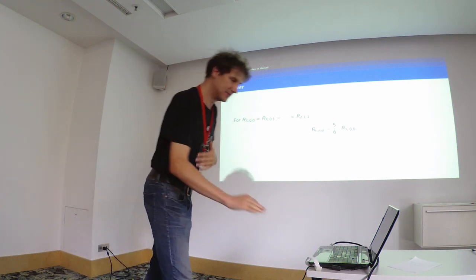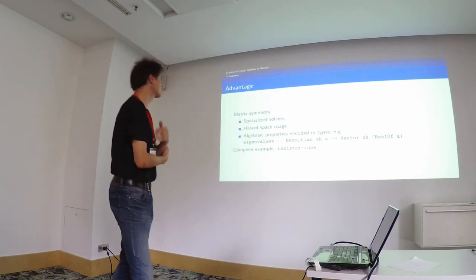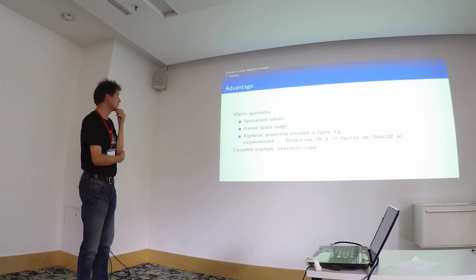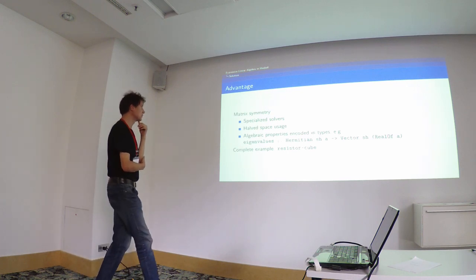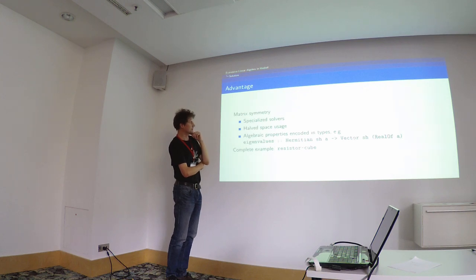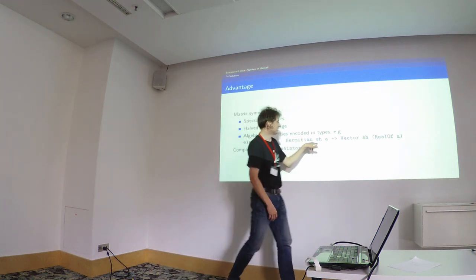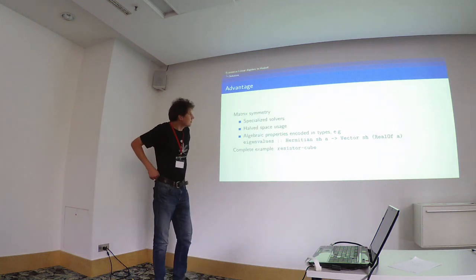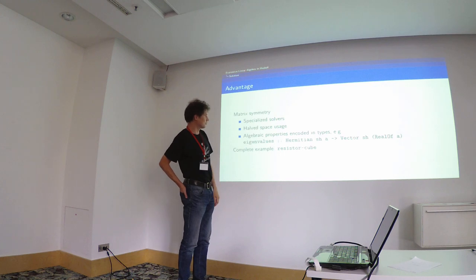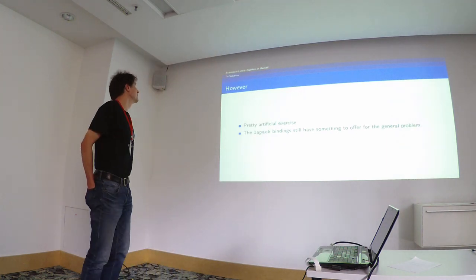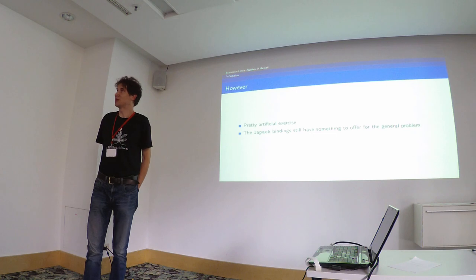What does this buy me? Matrix symmetry allows me to use specialized LAPACK solvers — I need only half the space, and I have algebraic properties: if the matrix is not only symmetric but Hermitian, then eigenvalues are all real. I can express this with types. You can watch the complete example in the 'resistor-cube' package. It's still a pretty artificial example, but even if you have real resistor networks, it can help you.